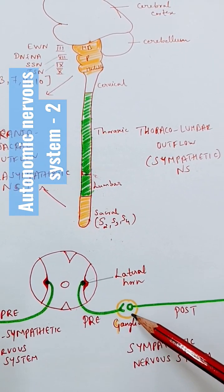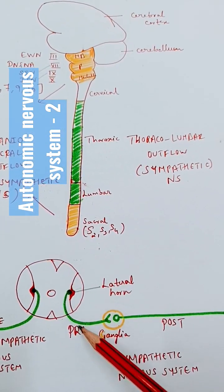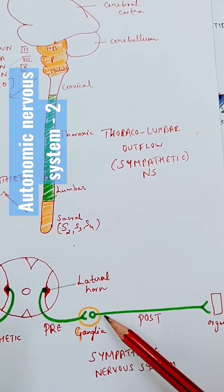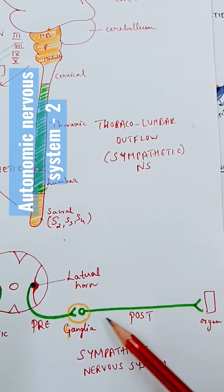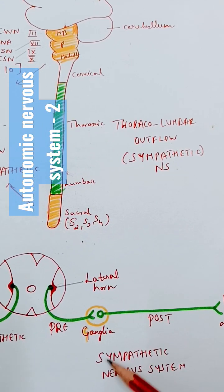This is called a preganglionic neuron. From the ganglia, another neuron arises and goes and supplies the organ, which is called a postganglionic neuron. So in the sympathetic nervous system, if you see, the preganglionic neurons are very short but postganglionic neurons are very long.